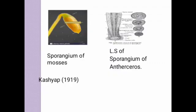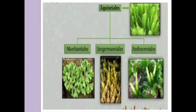Here are the diagrams of the sporangium of moss and sporangium of Anthoceros. Kacheff in 1919 proposed that bryophytes be divided into three classes: the first is Marchantiales, the second is Jungermaniales, and the third is Anthocerotales.